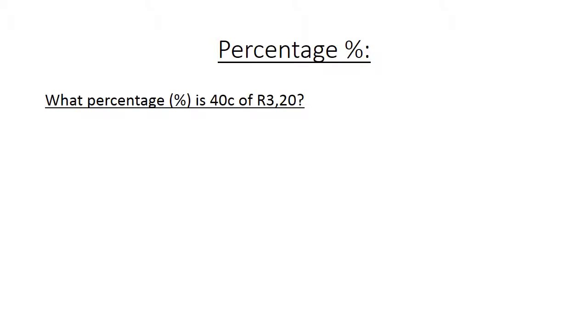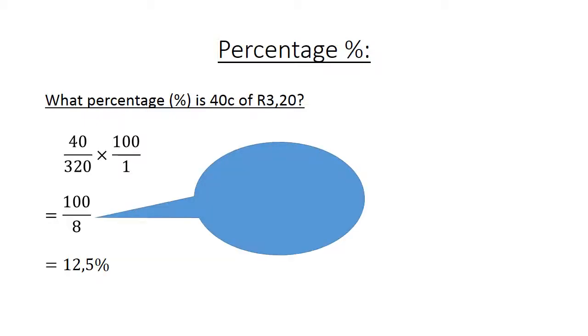What percentage is 40 cents of 3 rand 20? 40 over 320. Remember there is 100 cents in 1 rand, times 100 over 1 equals 100 over 8 equals 12.5%. Where did we get 100 over 8? 40 over 320 times 100 over 1. We divide 4 into 32, which equals 8, and now we get 100 over 8.